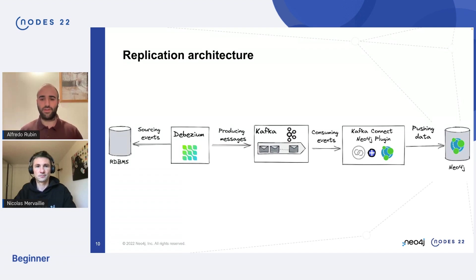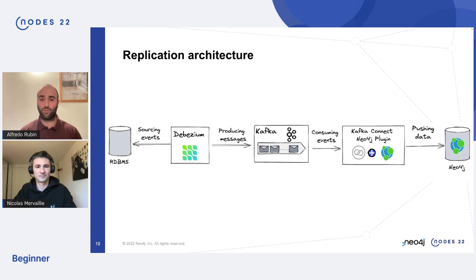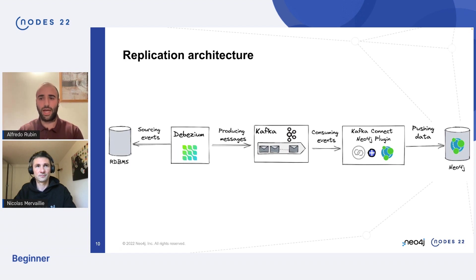Neo4j is the final destination of our Change Data Capture pipeline. It's also important to know that for the way the Neo4j plugin works, we will need one Cypher query for each topic the connector is subscribed to. So if we have 10 topics, we will have 10 Cypher queries to manage inside the Kafka connector.